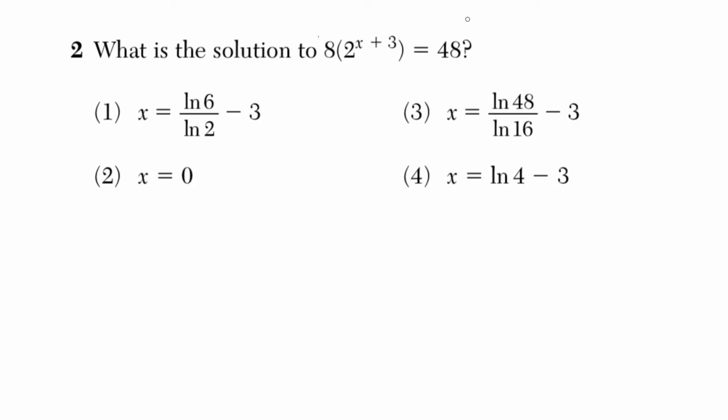So they're asking for the solution to this equation right here. We've got 48 equals 8 times 2 to the power of x plus 3. And I'm just noticing right away I see that we've got a variable term in our exponent.